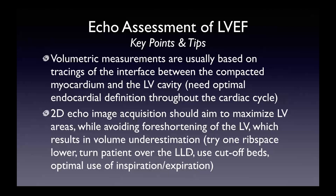Volume measurements are based on tracings of the interface between compacted myocardium and the LV cavity, so you really need optimal endocardial definition throughout the entire cardiac cycle. The 2D image acquisition should aim to maximize LV area and avoid foreshortening — which results in volume underestimation. Sonographers will usually try one rib space down to elongate that left ventricle and get the true apex, turn the patient well over into the left lateral decubitus position, and use cutoff beds to allow imaging at the true apex. Sonographers can also optimally use inspiration-expiration.